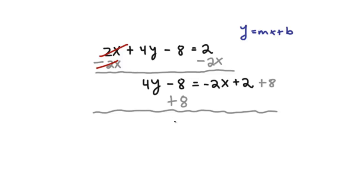So we're getting closer to the end. So now this becomes 4y equals negative 2x, and I'm going to combine this 2 and 8. I'm just going to write that as 10. 2 plus 8 is 10. And we all know what happens to this negative 8 and positive 8.